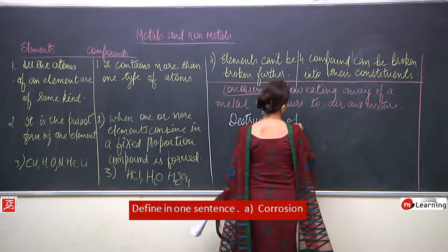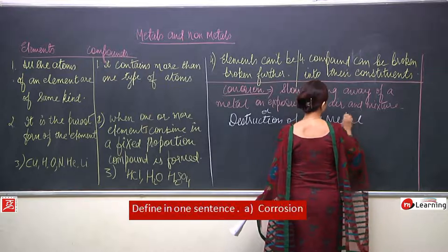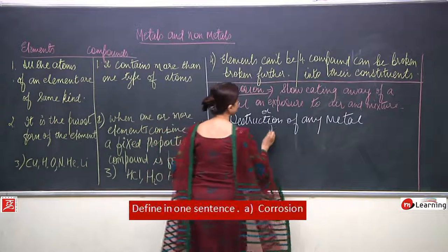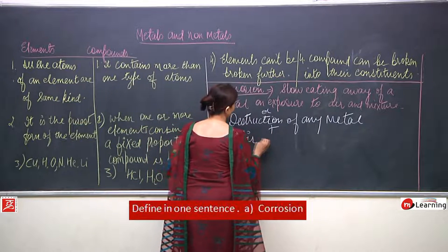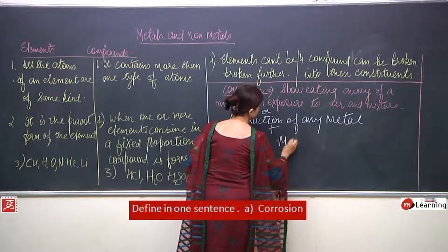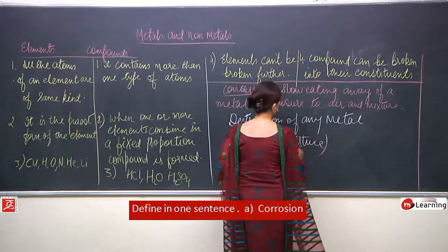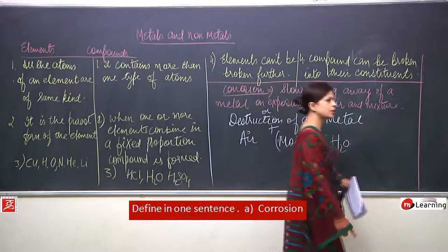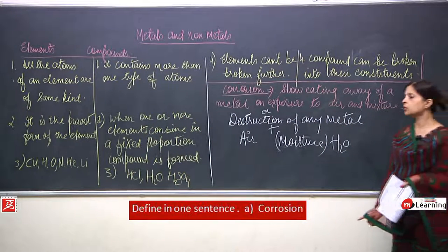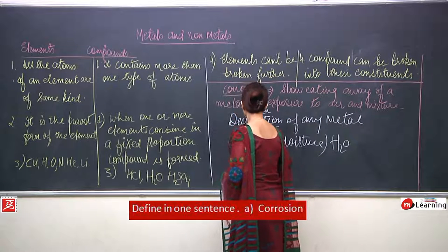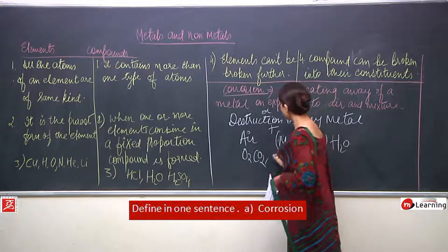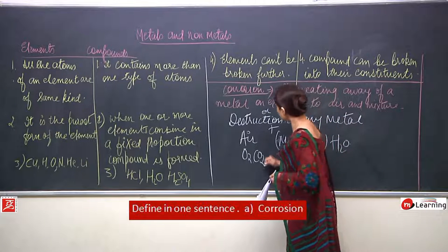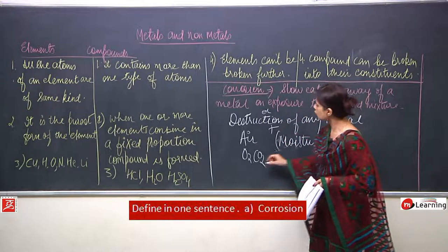Corrosion is the destruction of any metal when the metal starts destroying, and how it happens — when it comes in contact with air and moisture. Few metals get corroded due to the presence of oxygen, or because of a reaction with carbon dioxide, or due to hydrogen sulphide or sulphur present in the atmosphere. So it depends on which gases the metal is reacting with — it is better to write 'air.'